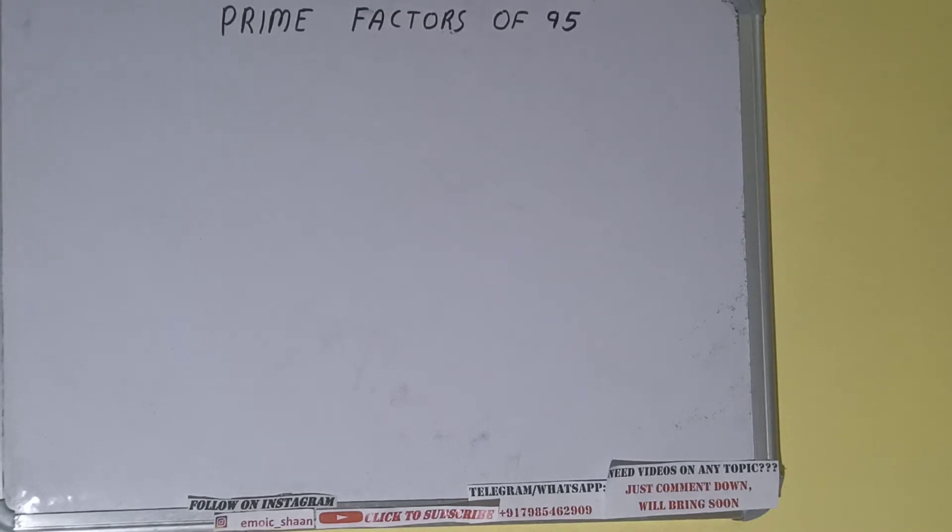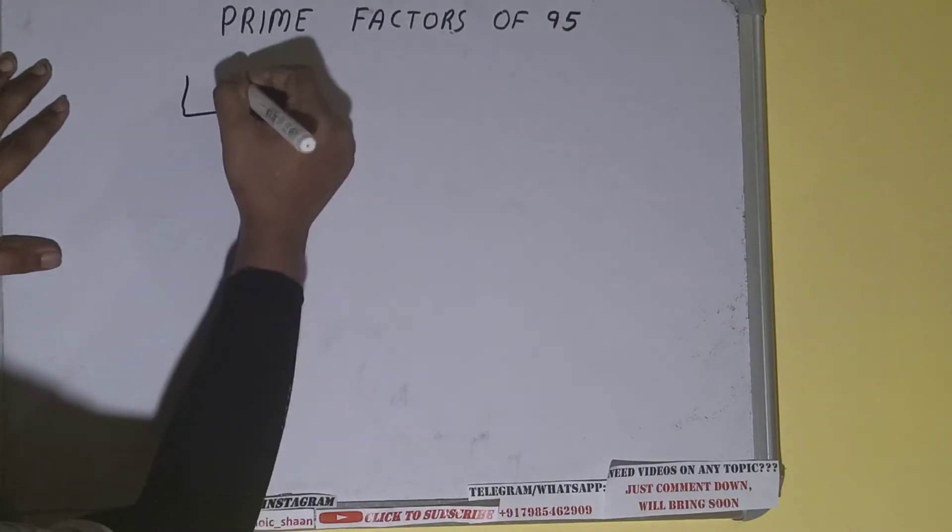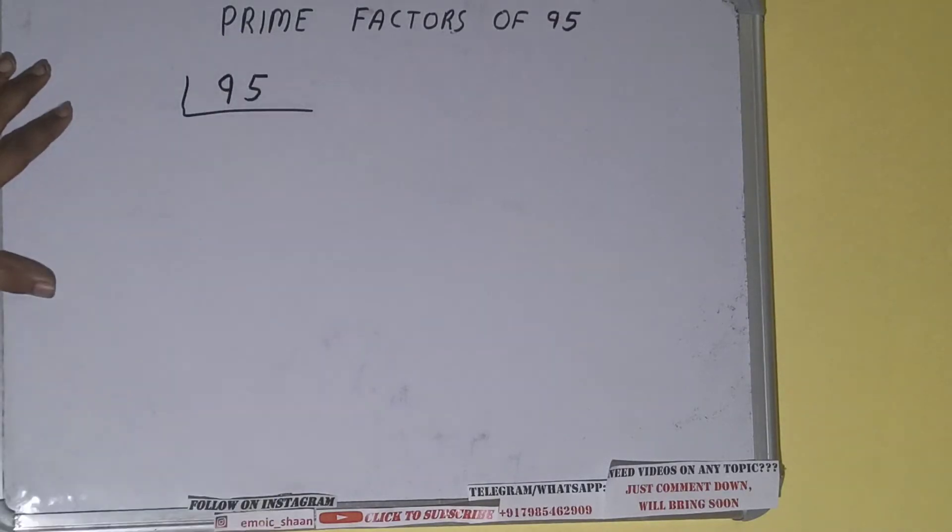Hello friends, and in this video I'll be helping you with the prime factors of the number 95. So let's start. First of all, we need to write the number like this. The next thing we need to know about is what are prime numbers. Prime numbers are numbers that are divisible by one and the number itself.